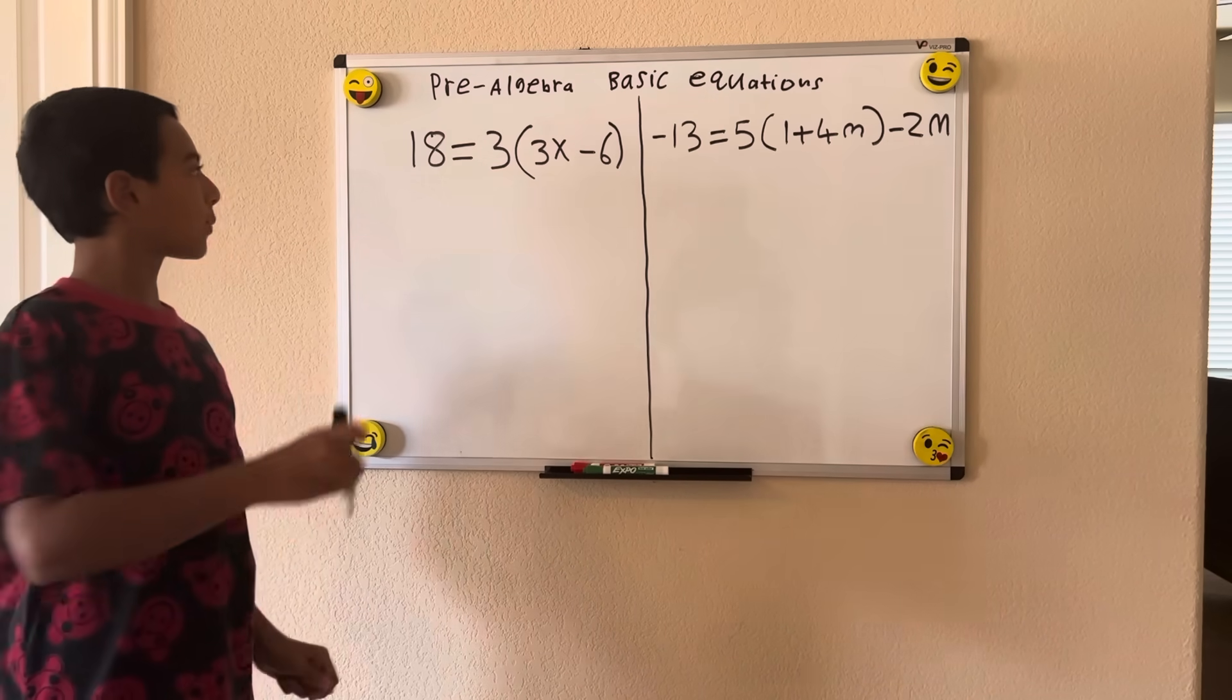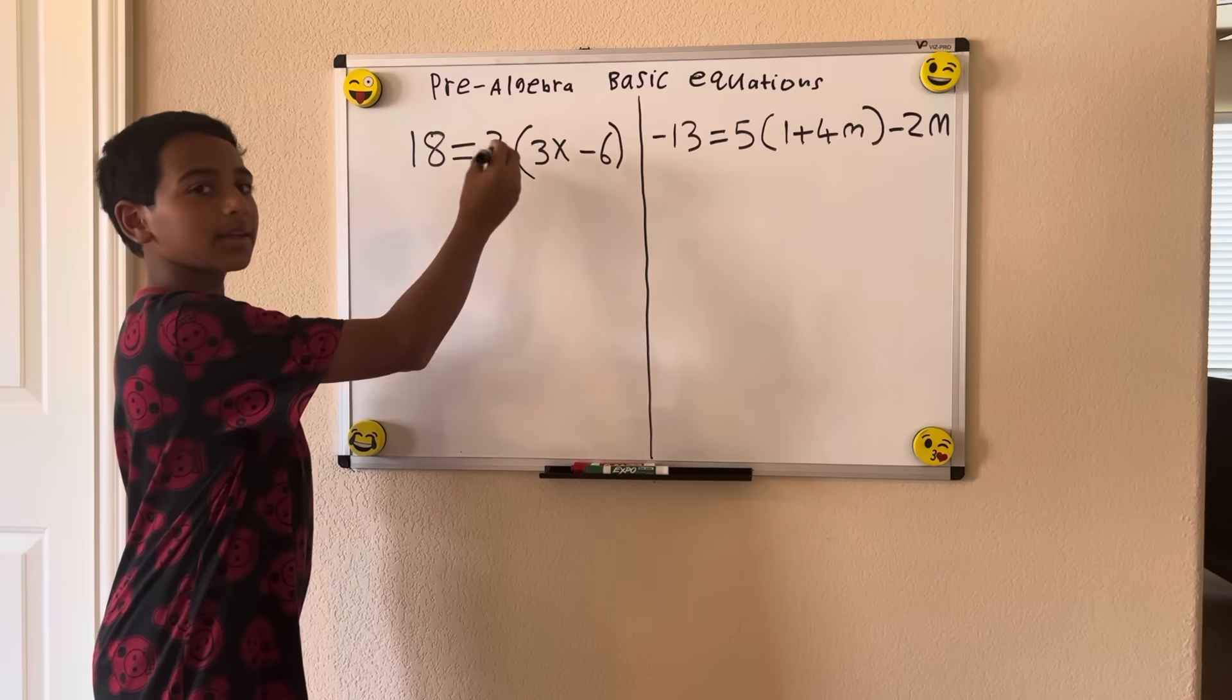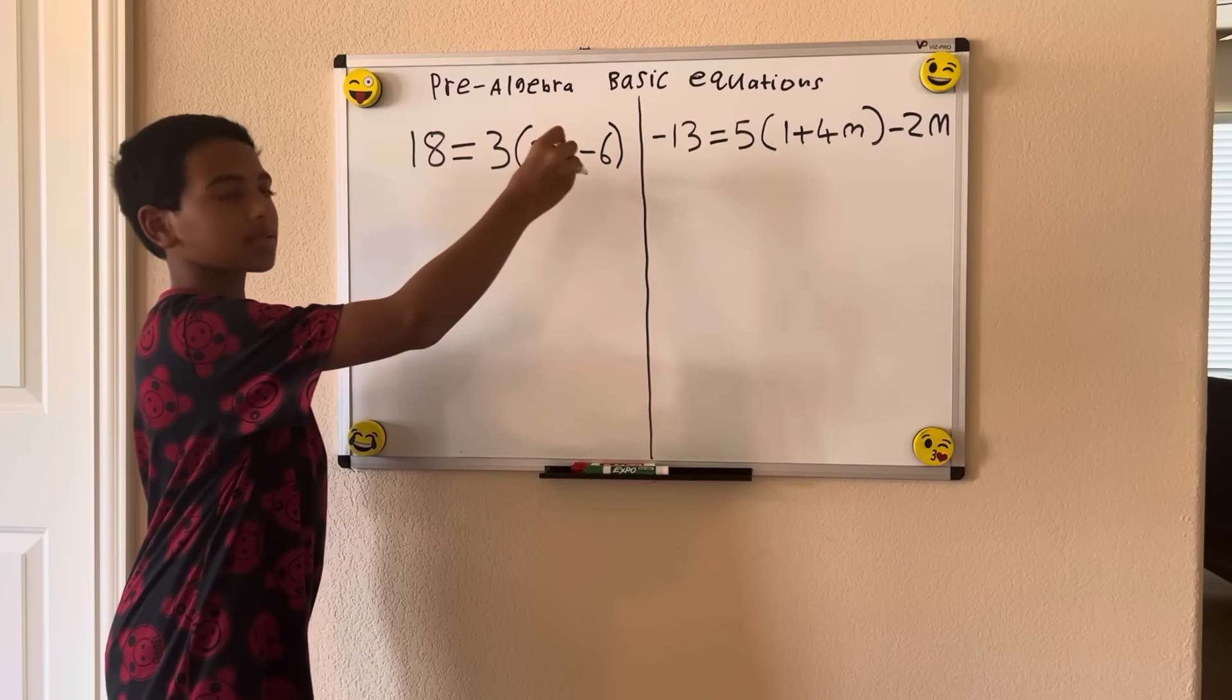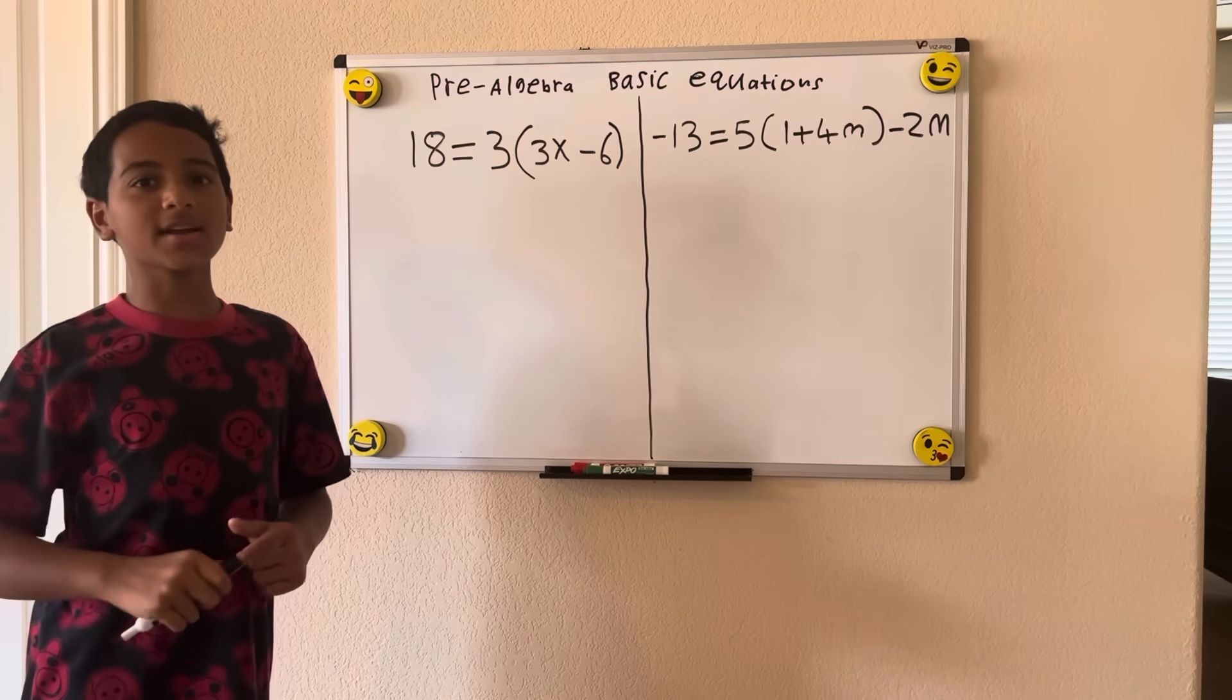So we have number 1, 18 equals 3 times parentheses 3x minus 6. How would you solve x in this equation?